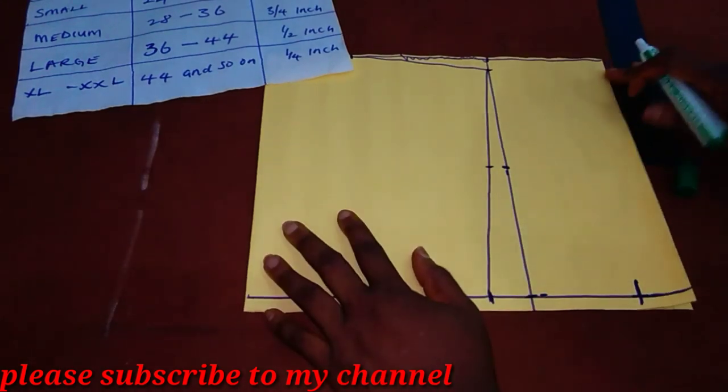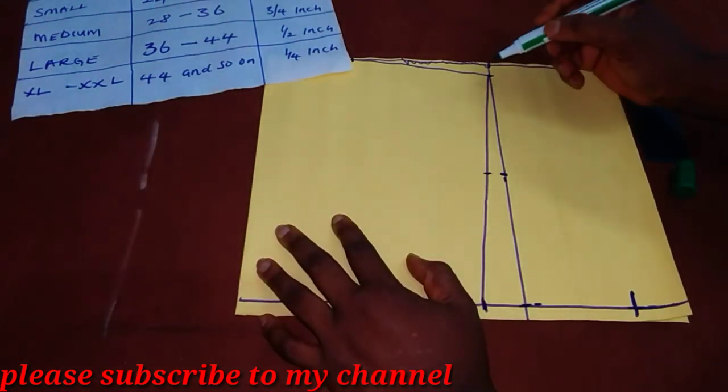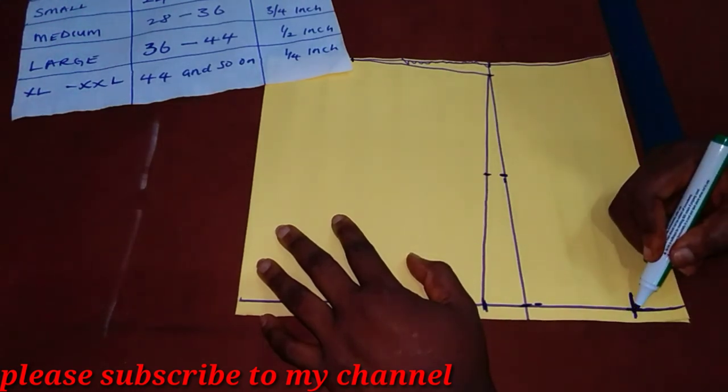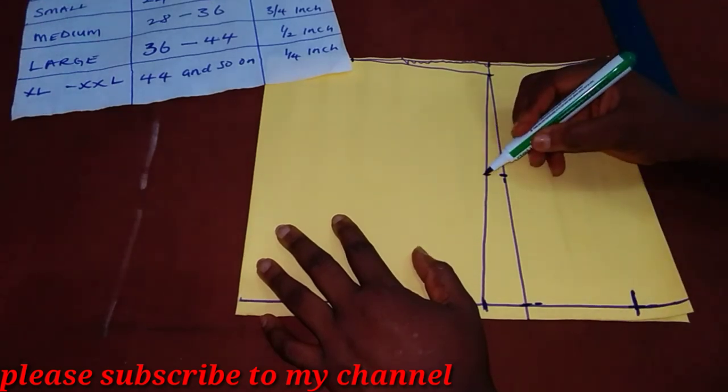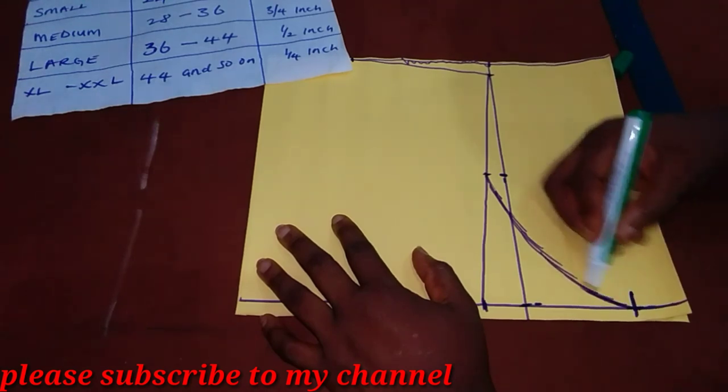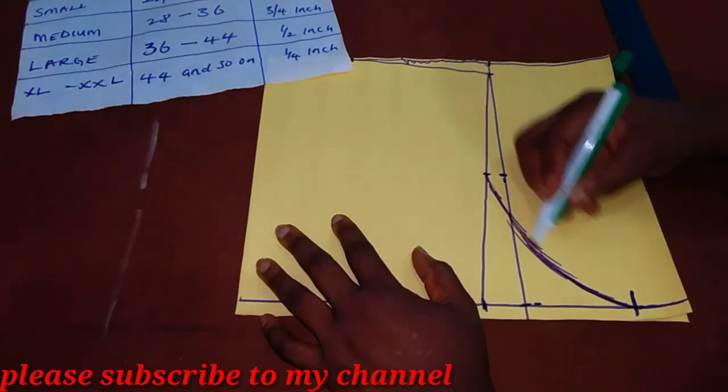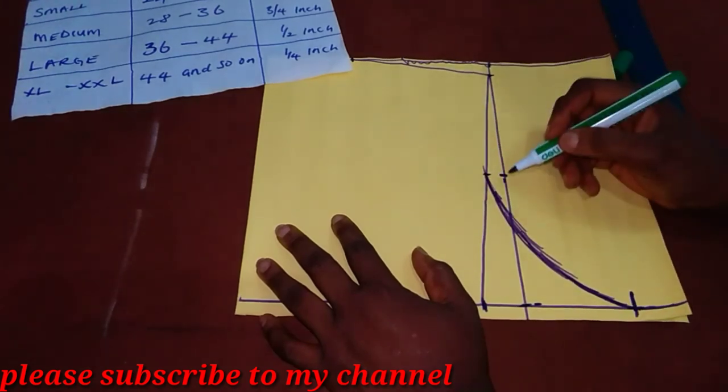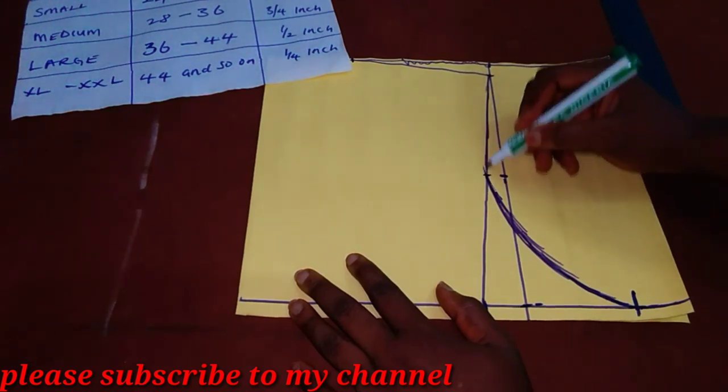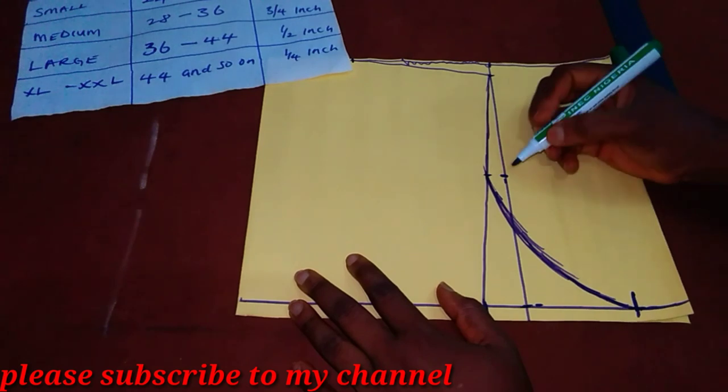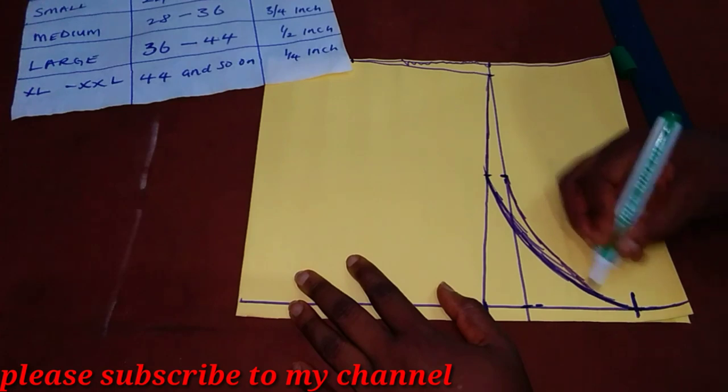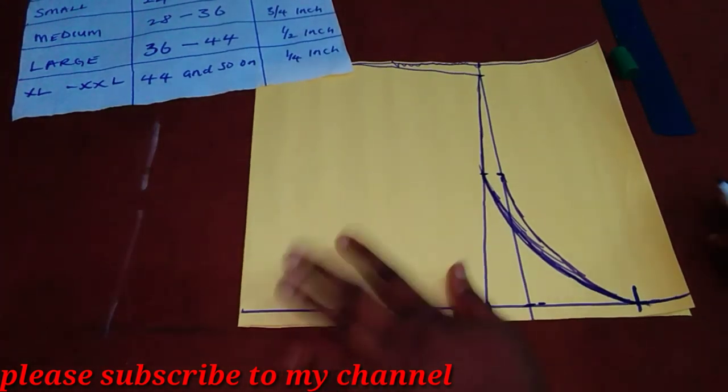Now, with this done, you use your French curve to connect first to this place, and then to our bust measurement. This is what I mean with your French curve. I'm sorry I don't have it, but I'm sure you will get what I'm doing. So this now is our front armhole. And this should be our back. So, this is the lazy method.